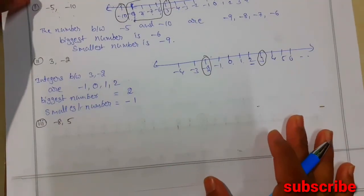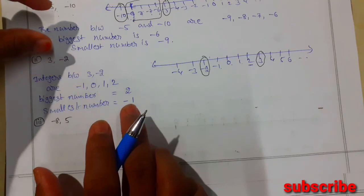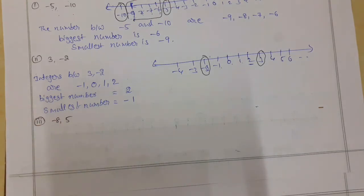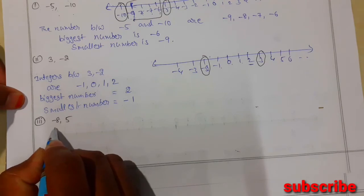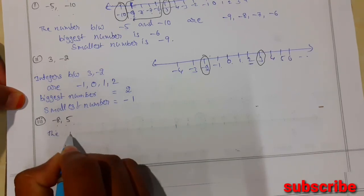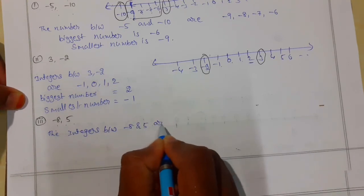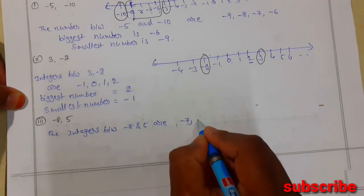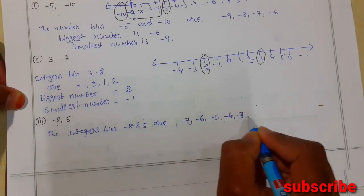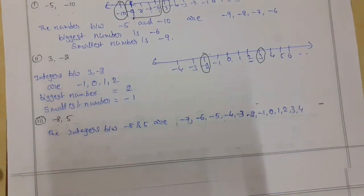Without using a number line, we can write the integers between minus 8 and 5 directly. The integers between minus 8 and 5 are: minus 7, minus 6, minus 5, minus 4, minus 3, minus 2, minus 1, 0, 1, 2, 3, 4.